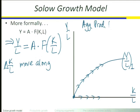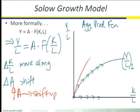Suppose there's instead a change in A — that total factor productivity or Solow residual. A is not measured on one of the axes, so if we change the value of A, it's going to shift the whole function. If there is an increase in A, we shift the entire production function up. I'll draw a second production function above the first — Y over L (2) — corresponding to a higher value of A, where total factor productivity has a greater value.